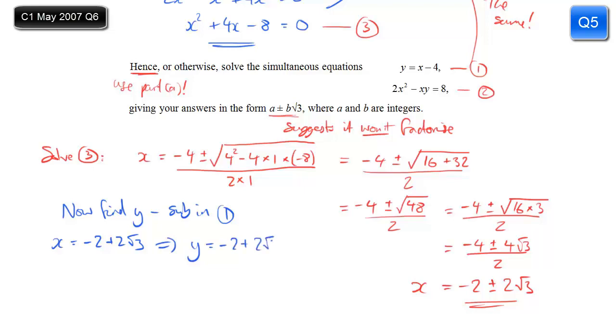And similarly, when x is minus 2 minus 2 root 3, y will be that. So minus 2 minus 2 root 3, take away 4. Which is minus 6 minus 2 root 3. So those are my two y values to go with my two x values. And we've solved the question.